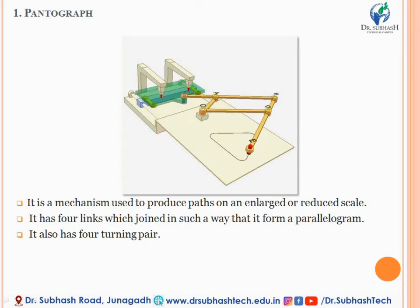The first and most important type of Spatial Mechanism is the Pantograph. It is a very well-known device. Basically, a Pantograph is a mechanical device or mechanism which is used to produce the path of an enlarged or reduced copy. So if you require to enlarge or reduce the profile of any gear, mechanical link, or machine component, the Pantograph is used for that purpose.